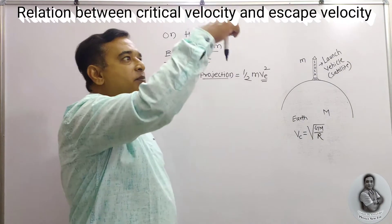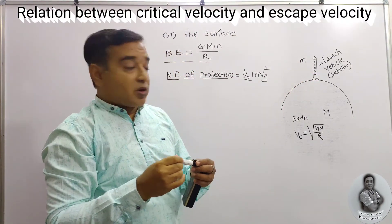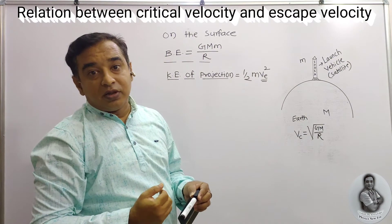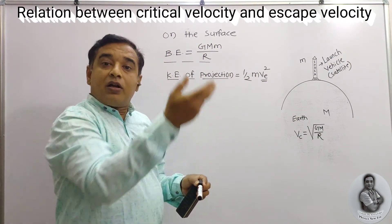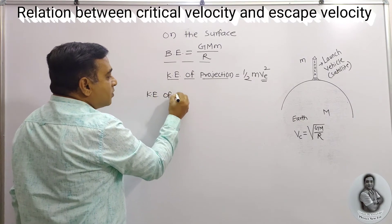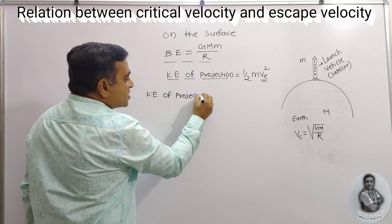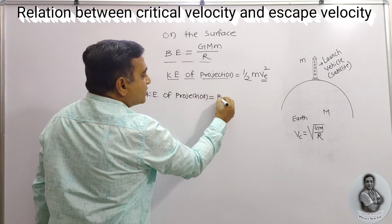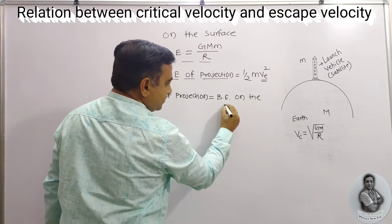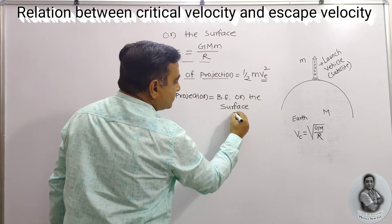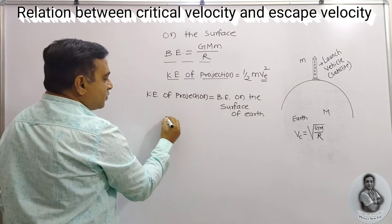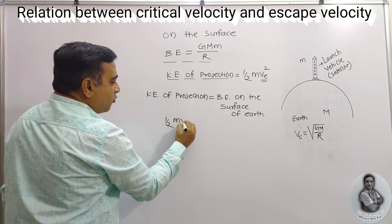Since the satellite is bound to the earth, to project it into space it must be given kinetic energy in the upward direction. The condition for launch is that kinetic energy of projection must equal the binding energy on the surface of the earth. So we equate: ½m·ve² = GMm/R.